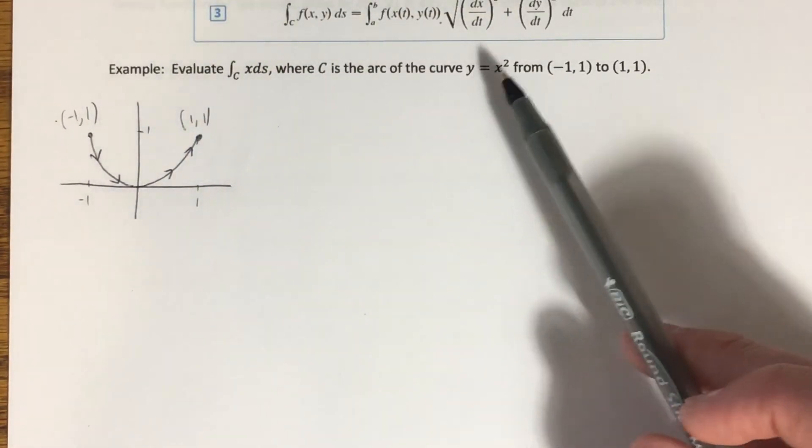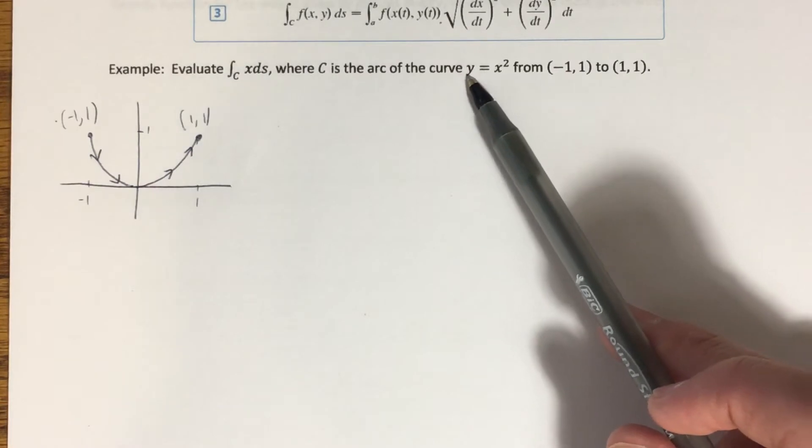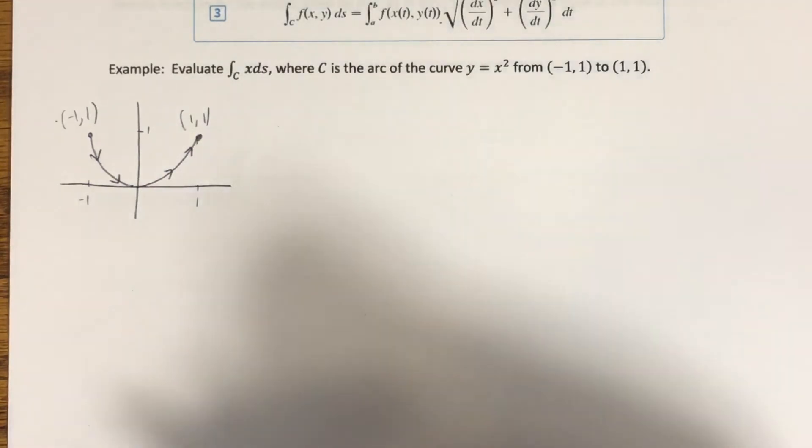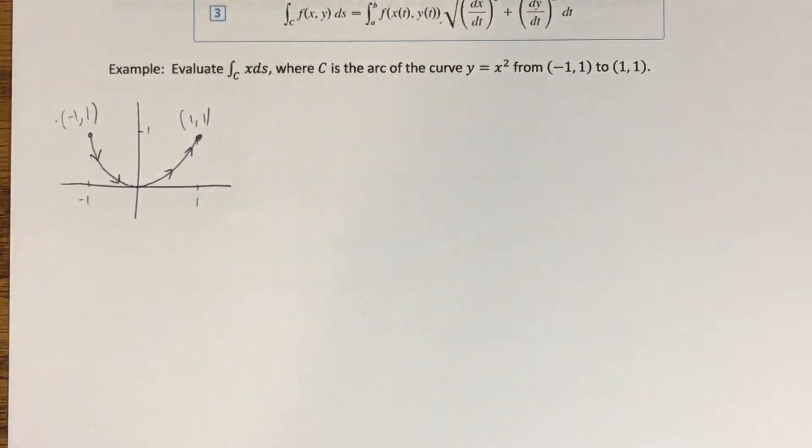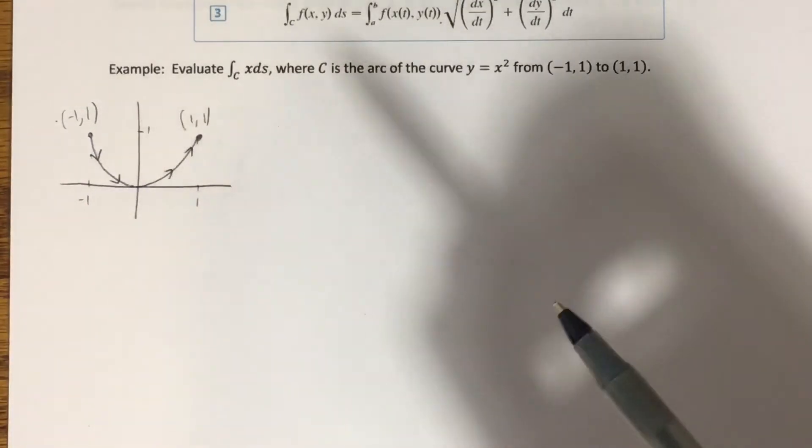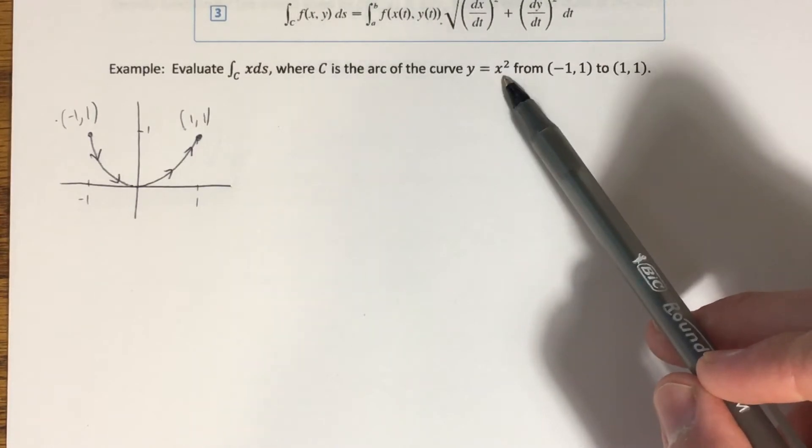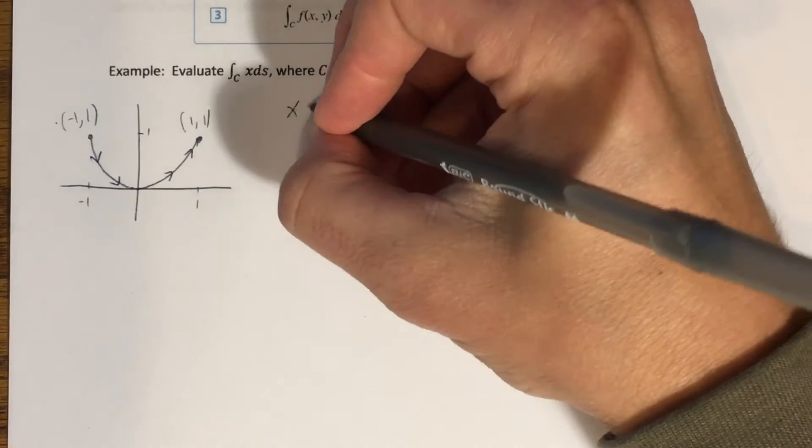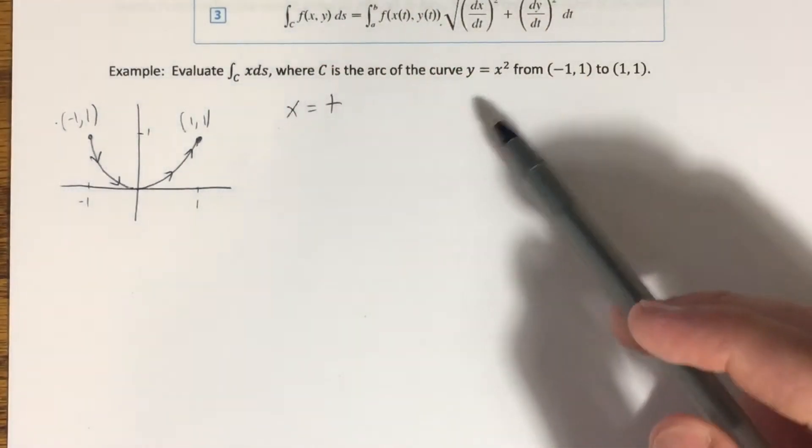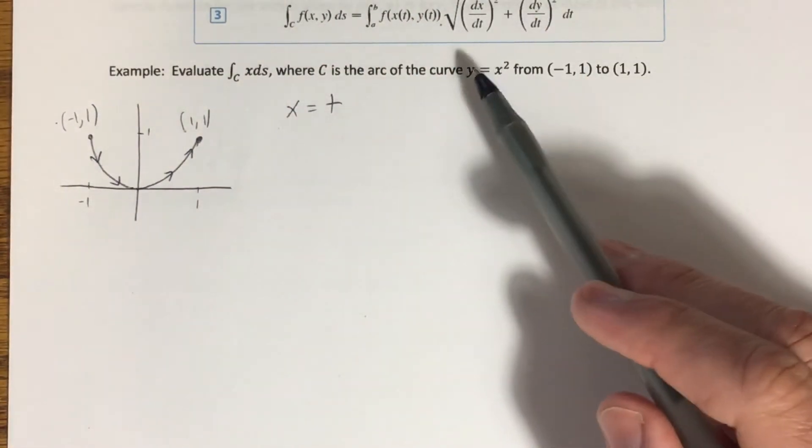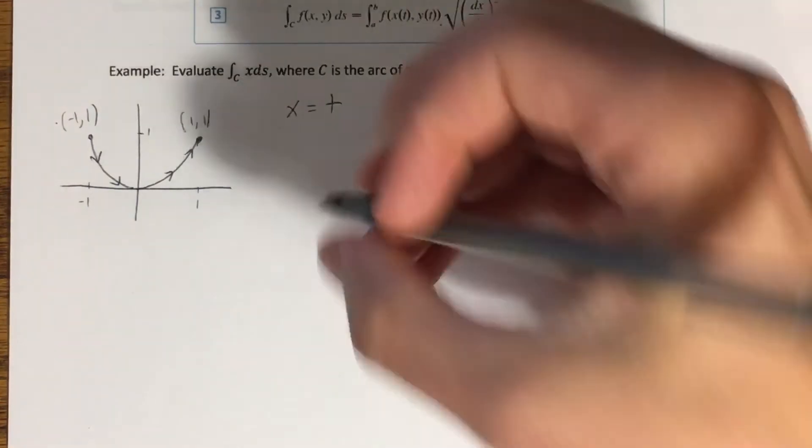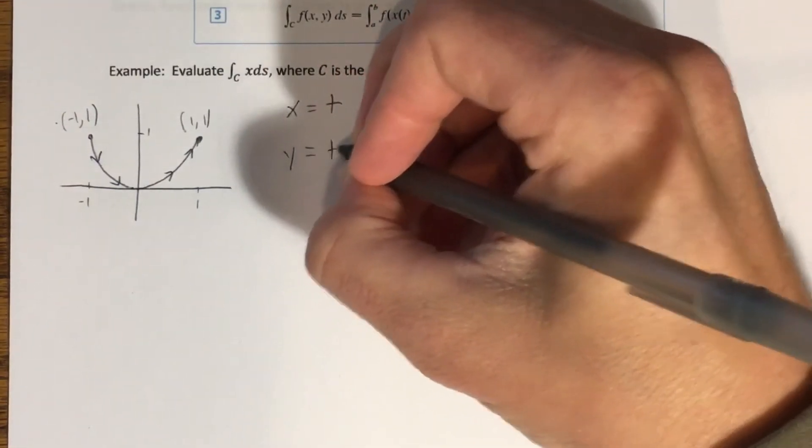But now let's come up with that parametrization. So this curve is given to us in the form of a function. y is a function of x. Lots of times curves are not given to us in the form of a function, but when they are, they're actually very easy to parametrize. What we do is we choose the independent variable to be our parameter, so that x, in this case, is equal to t. And then substituting t for x shows us that y would be equal to t squared. So that's my parametrization that I want to use.